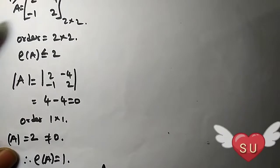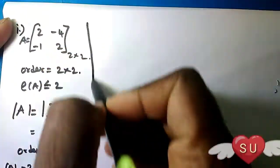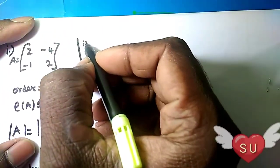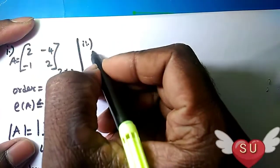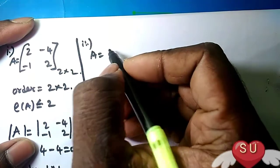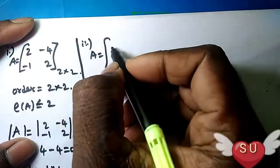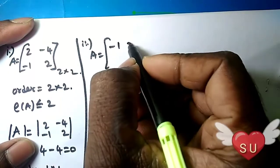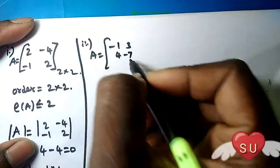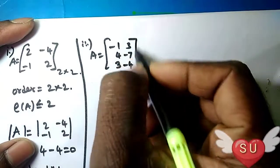Rank of y is equal to 1. I am going to show you how to find the rank of y equal to 1. The second sum is equal to 1. It will be equal to minus 1, 3, 4 minus 7, 3 minus 4.